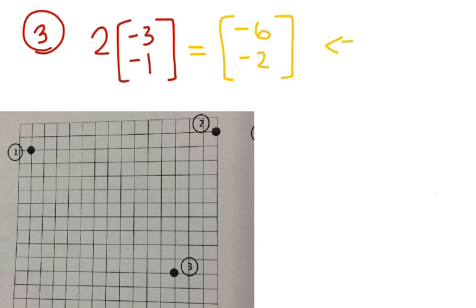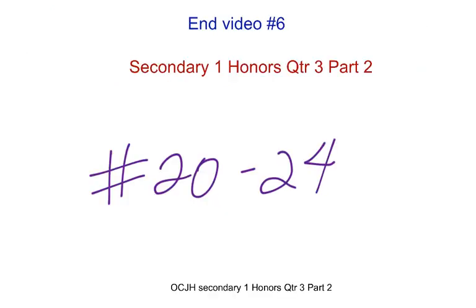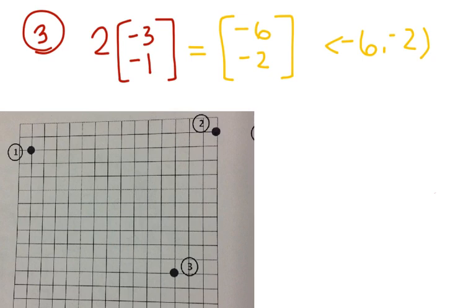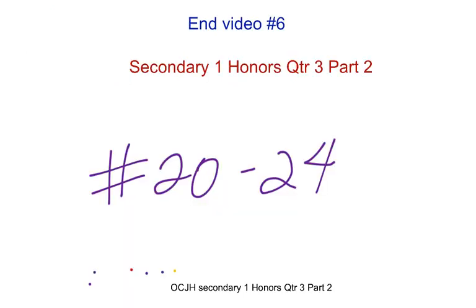So if I start where it says number three and go negative six and then negative two, then that would be my vector. So if I did my original negative three, negative one, you'll notice that's half the length, same direction. And so, you need to understand what a scalar does. Now that you know that, you are now ready to do twenty through twenty four in your practice worksheet and this is the end of video six.